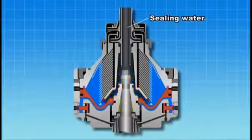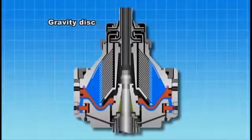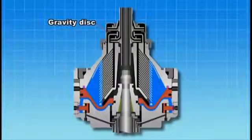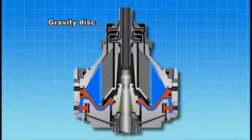The separation boundary surface must be set in a reasonable range to ensure proper operation. This is achieved by changing the internal diameter of the gravity disk.